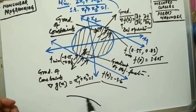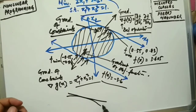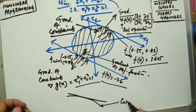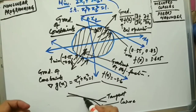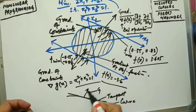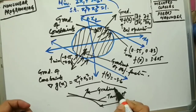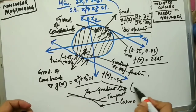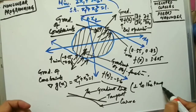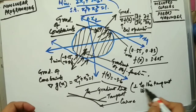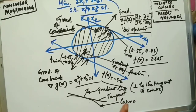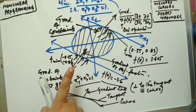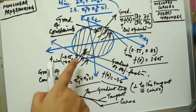This curve has a tangent, and the perpendicular line to the tangent is known as the gradient line. The gradient is perpendicular to the tangent of the curve. The gradient of the constraint will be pointing outward from the circle, and its direction depends on the point at which the gradient is evaluated.